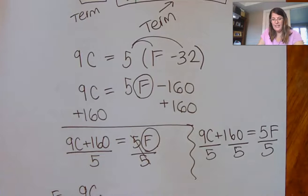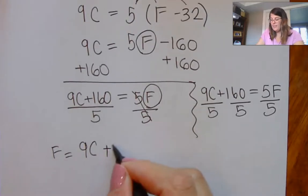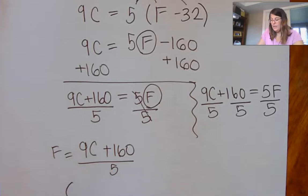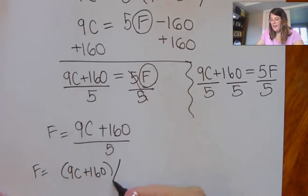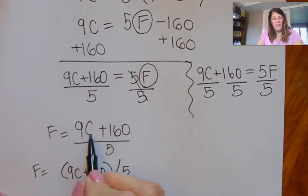So when you do it like this, you're going to have F is equal to 9C plus 160 all over five. So remember in Buzz, you would type that in as parentheses 9C plus 160 divided by five. Because remember, if there's more than one thing in the numerator or denominator, you need the parentheses.